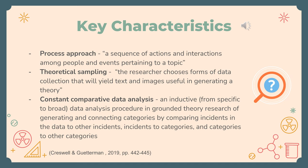There are six key characteristics of a grounded theory design: process approach, theoretical sampling, constant comparative data analysis, a core category, theory generation, and memo writing. A process approach means the theorists develop an understanding of a process that is relevant to a substantive issue, and the process is a sequence of actions and interactions among people and events relating to the topic. Theorists can isolate and identify actions and interactions among participants. For theoretical sampling, it means the researcher chooses forms of data collection that will yield text and images useful in generating a theory, and the sampling is intentional and focuses on the generation of a theory.